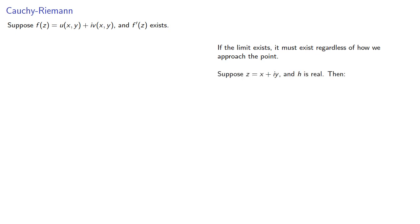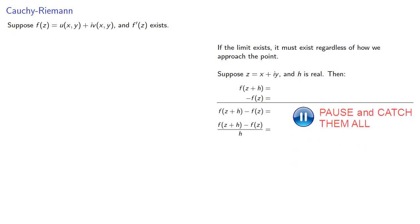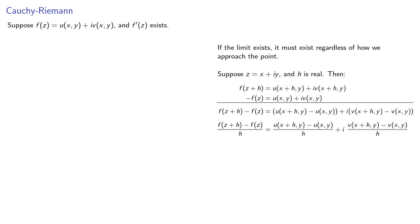Suppose we have our complex number and h is real. Then we can find our difference quotient. Taking the limit as h goes to 0 gives us the derivative of f on the left, and these two become the partial of u with respect to x and the partial of v with respect to x.